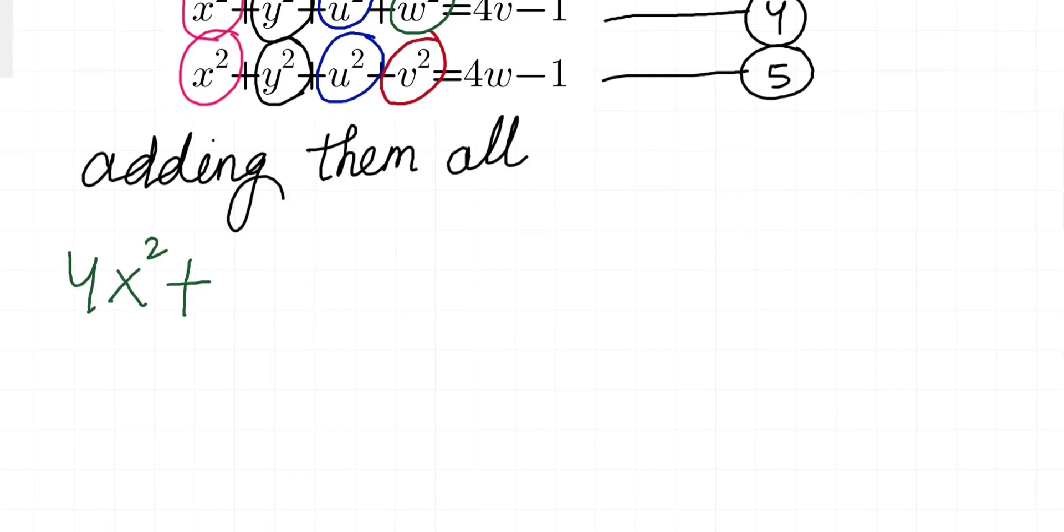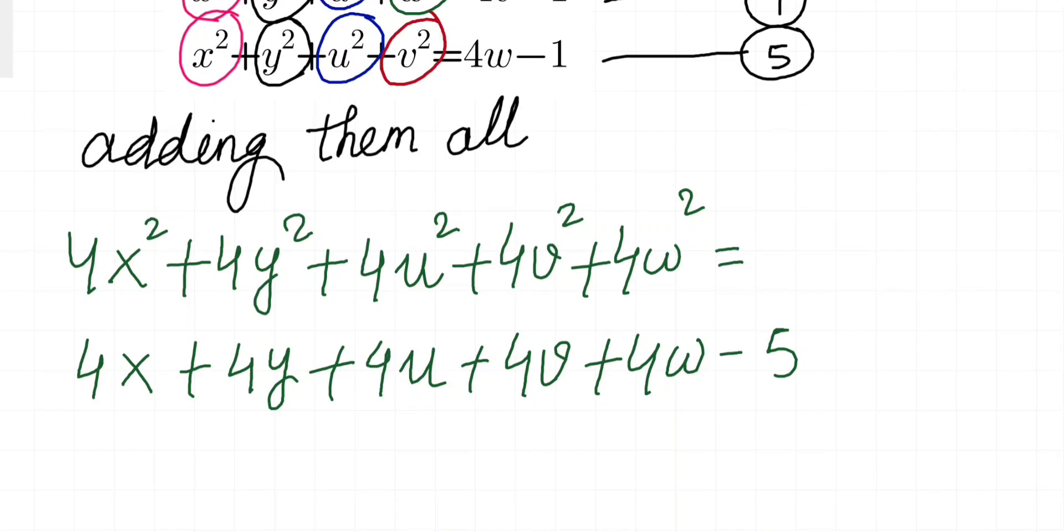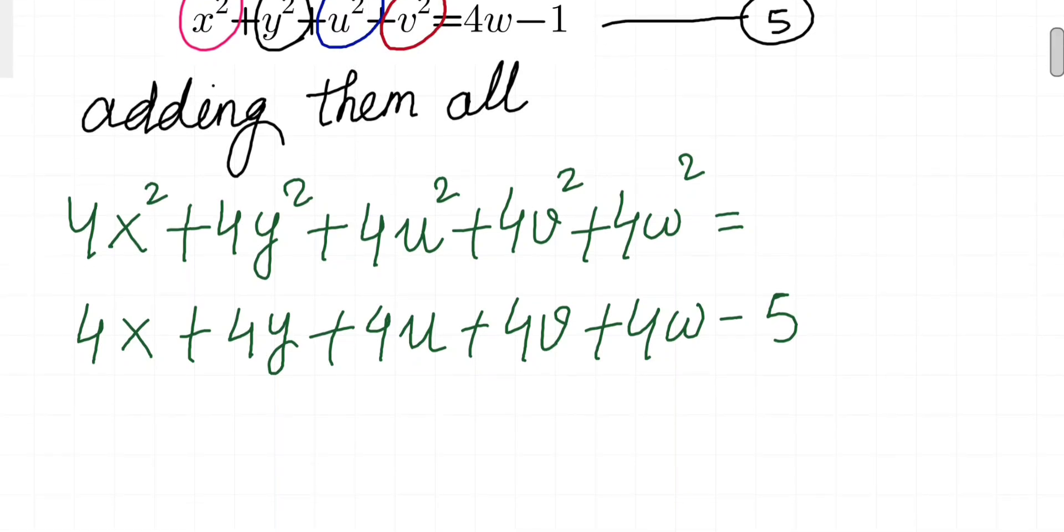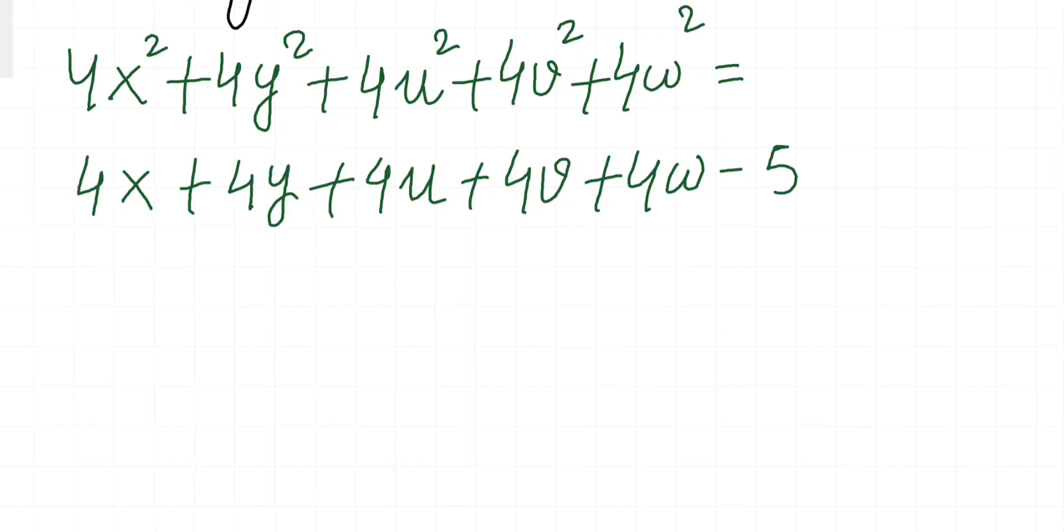This is what we are going to have. Now let's see if we can do some factorization or complete the square. Rearranging them, I am going to couple 4x² - 4x + 1 from here.